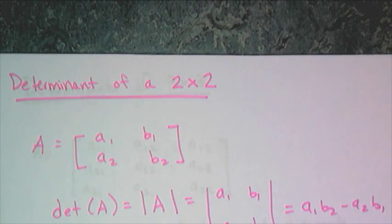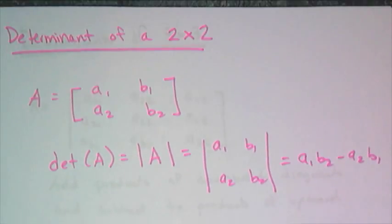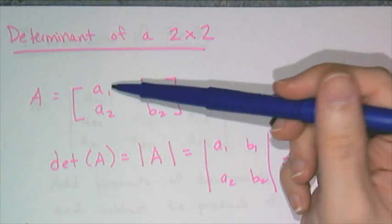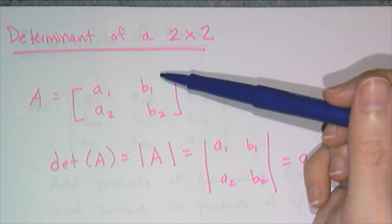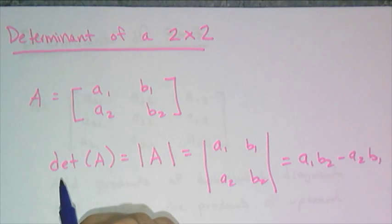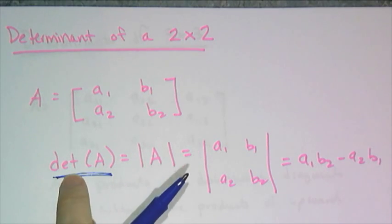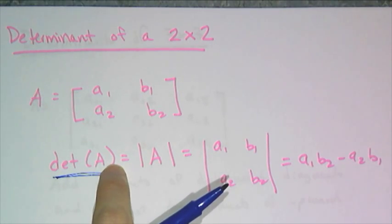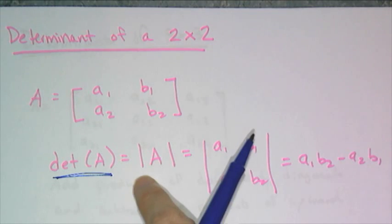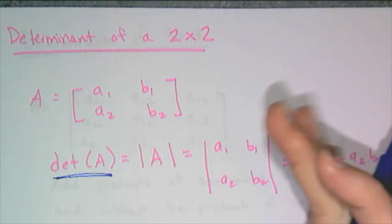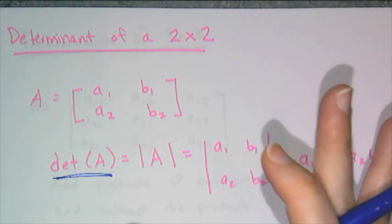Now let's talk about notation with our 2 by 2 matrix. If I have some matrix, column 1 is A1, A2, column 2 is B1, B2. If I want you to find the determinant of the matrix, one way to write it is det, open parentheses, name of matrix.